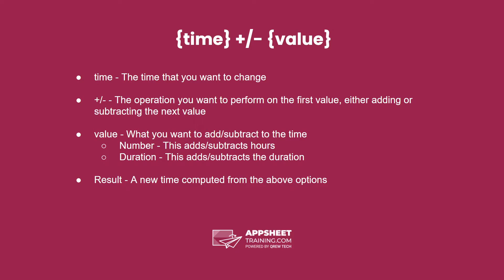These expressions follow this general outline: a time, an operation (plus or minus), and the value you want to add or subtract. Those values at the end can be either numbers, which will add or subtract hours, or durations, which will add or subtract durations. The result is a new time computed from the operations above.